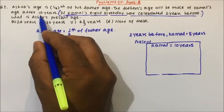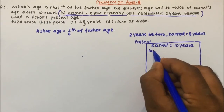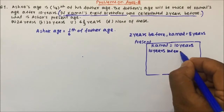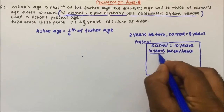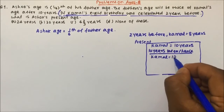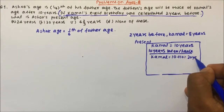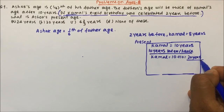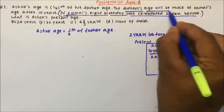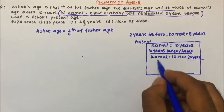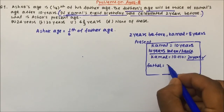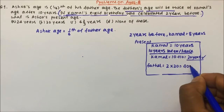Now, the father's age will be twice Kamal's age after ten years. If we talk about ten years from today — ten years later, or ten years hence — today Kamal is ten years old, so after ten years Kamal will become twenty years old. When Kamal becomes twenty, the father's age will be twice Kamal's age, so father's age after ten years will be two into twenty, which means the father will become forty years old.